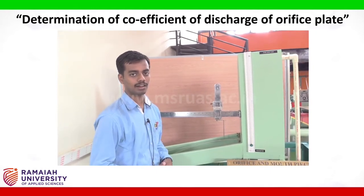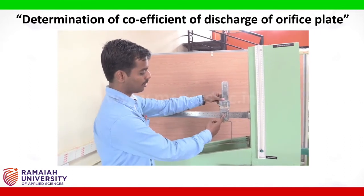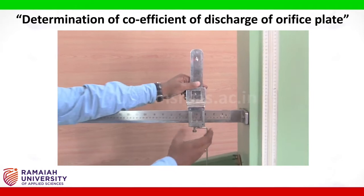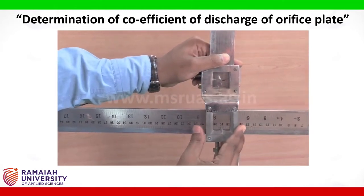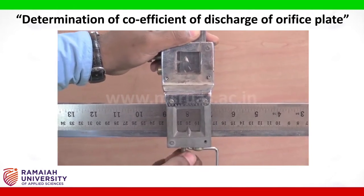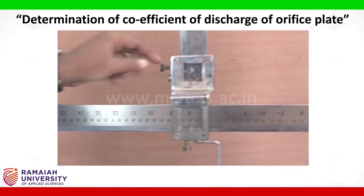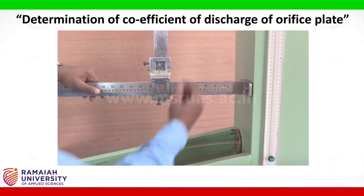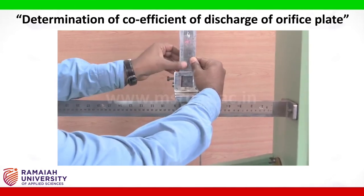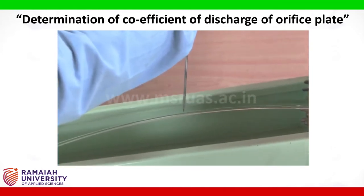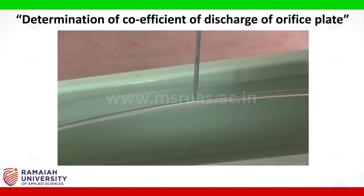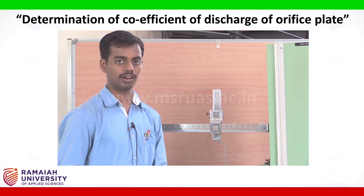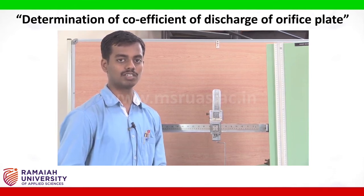After taking the first reading at 10 centimeters on the x scale, we shall move it to 20 centimeters to take the second reading. Unlock the screw on the x scale, move it until it reaches 20 centimeters, and lock the nut again. The corresponding y scale has to be brought down so that the tip is touching the surface of the water. Similarly, we shall take further readings at 30 centimeters and 40 centimeters in the x direction, with corresponding y direction readings also taken.